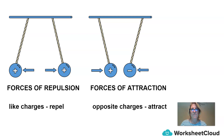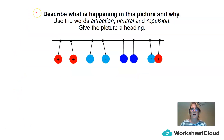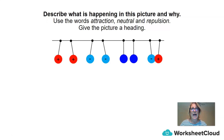Here is a nice little diagram for you to copy down. You can pause the video while you copy down the diagram and the definitions. To check that you understand the work covered so far, I would like you to redraw this diagram and describe what is happening in the picture and why. I would like you to give the picture a heading and use the words attraction, neutral, and repulsion.